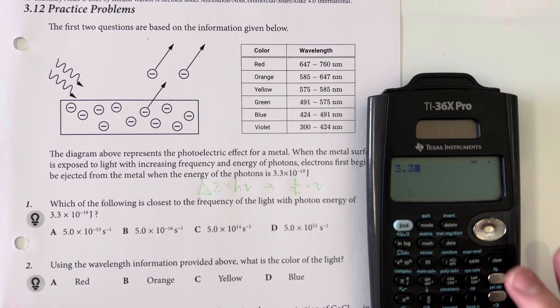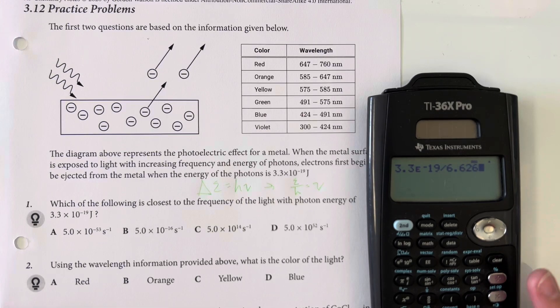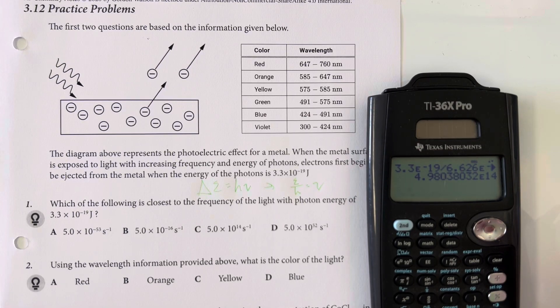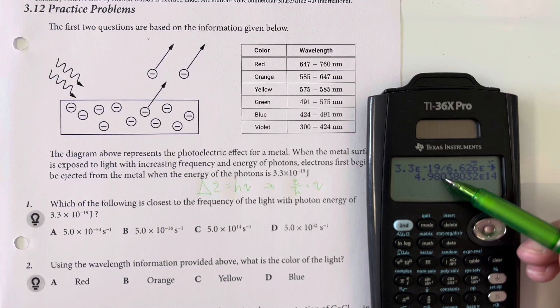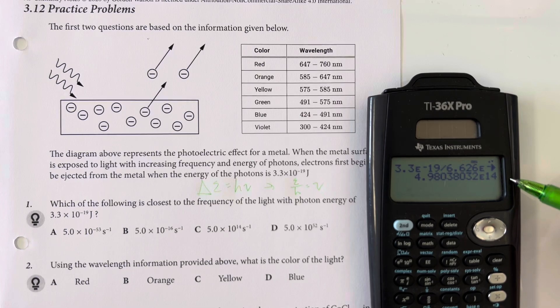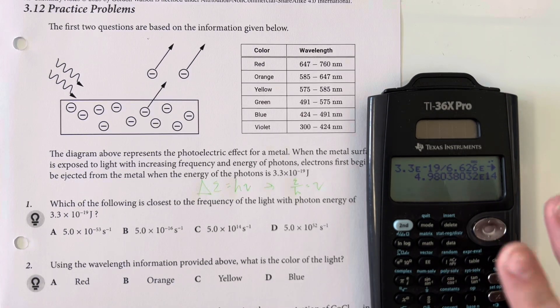So 3.3 times 10 to the negative 19th divided by Planck's constant, which is 6.626 times 10 to the negative 34th joule seconds. Which gives me 4.98 times 10 to the 14th.